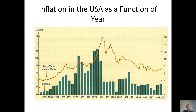Nixon resigned under probable impeachment and was replaced by Ford. Ford attempted a campaign against inflation where he tried to make it non-patriotic to ask for a pay raise or to raise prices. He issued buttons called WIN buttons — for Whip Inflation Now. This clearly did not work either, and prices continued to increase.